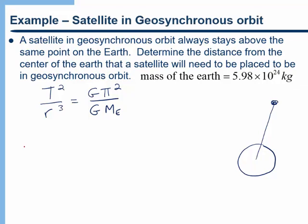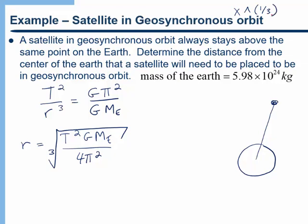We can see that if we solve algebraically for r, we get T² G times the mass of the earth divided by 4π², and notice that this is a cube root, I should say. So make sure that you know how to do a cube root on your calculator. You can either find that function, but remember you can also just raise to the one-third power, and that's another way to take a cube root.